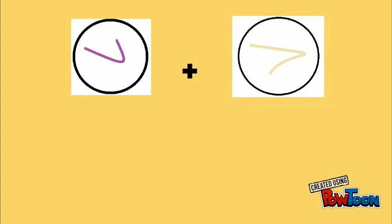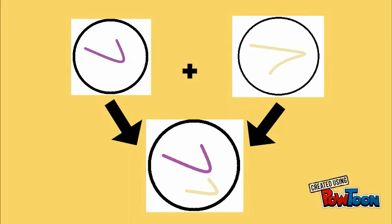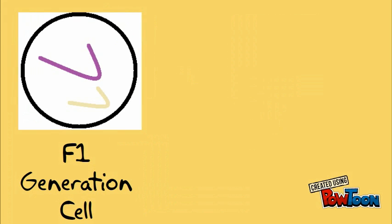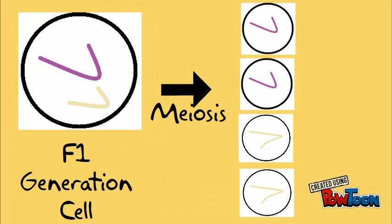Now let's look at how this happened. Mendel believed that the parents, the purple flower plant and the white flower plant, each gave one factor to the offspring. Therefore, the offspring had one purple factor and one white factor. However, as purple is dominant to the white, all the offspring appeared purple. When the cell of the offspring underwent meiosis, its factors divided, or were segregated, into four different gamete cells.